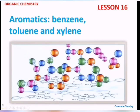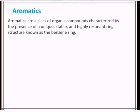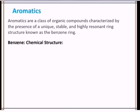Welcome to lesson 16. In today's class we'll be looking at aromatics. We'll look at benzene, toluene and xylene. Aromatics are a class of organic compounds characterized by the presence of a unique, stable and highly resonant ring structure. This ring structure is known as the benzene ring. These compounds are integral to both industrial and chemical processes and have diverse applications across various industries.